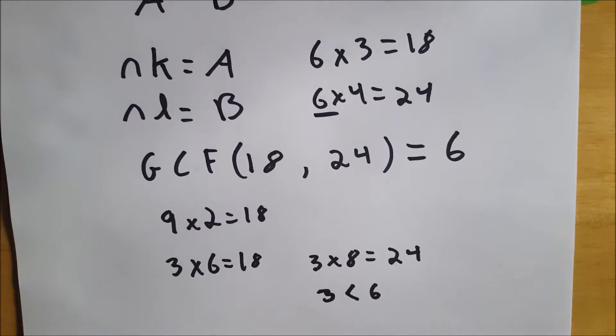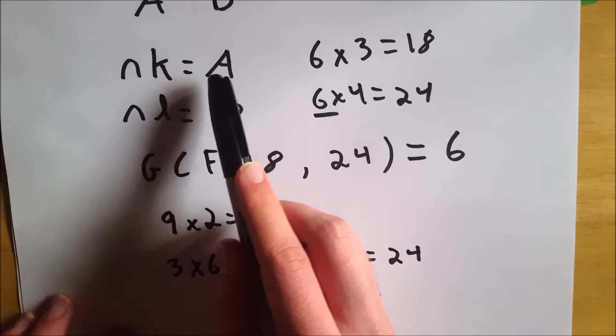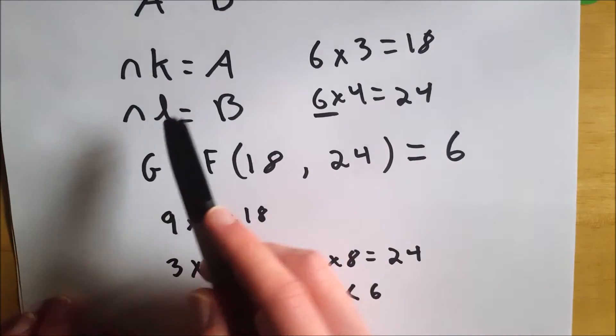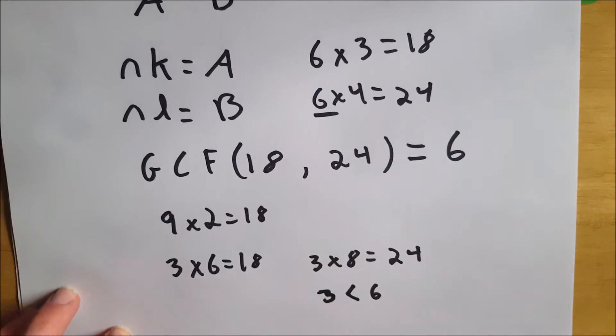So the greatest common factor of 18 and 24 equals 6 because it's the largest number that, when multiplied by another integer, equals 18. And there's another integer you can multiply it by to get 24. It's the largest number that goes into both a and b, both 18 and 24 in this case.